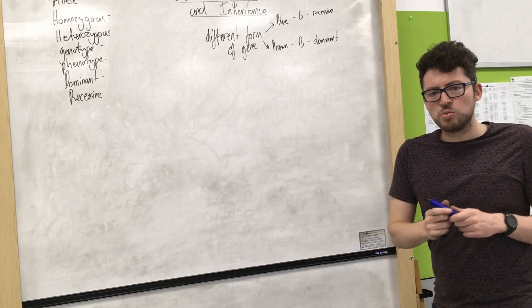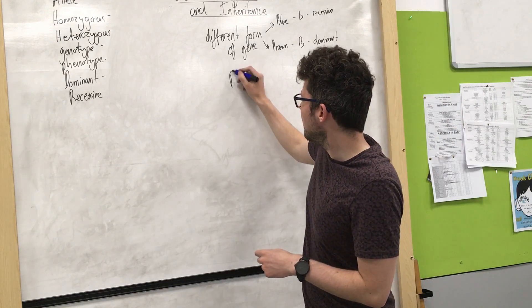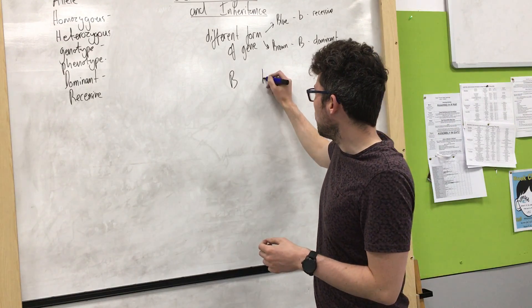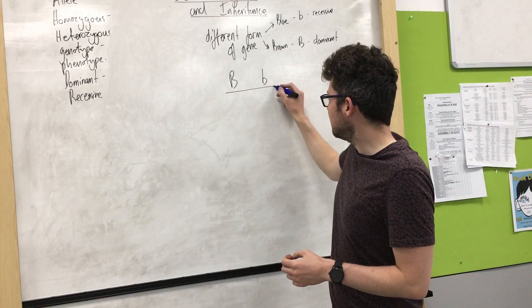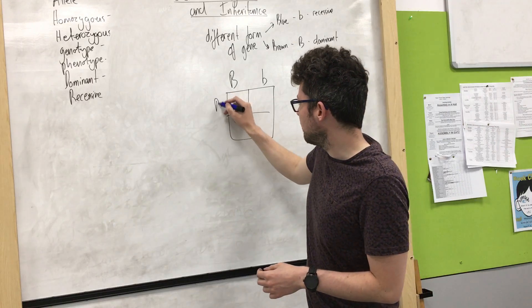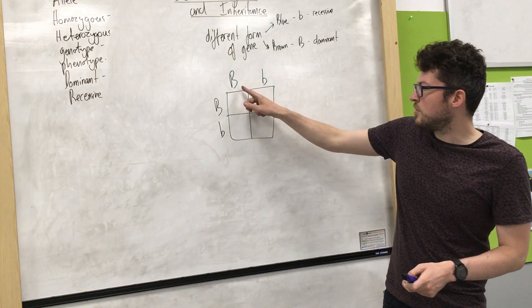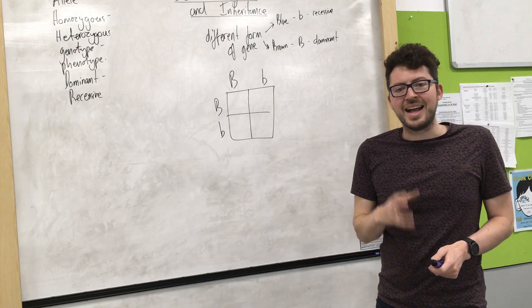So let's imagine my parents each had one of each. So my mum had one brown and one blue and my dad also had one brown and one blue. So each of them would have brown eyes because they've both got one brown eye allele.